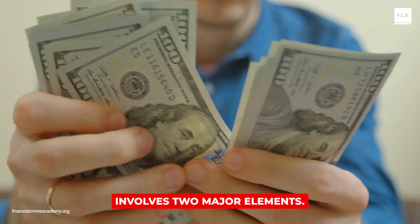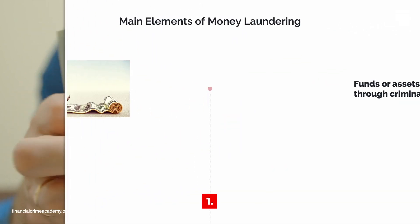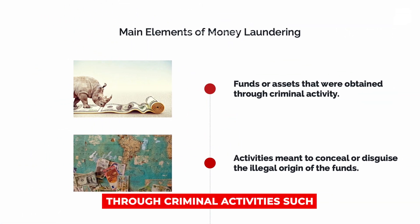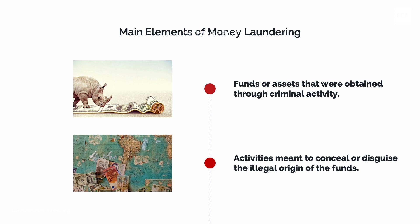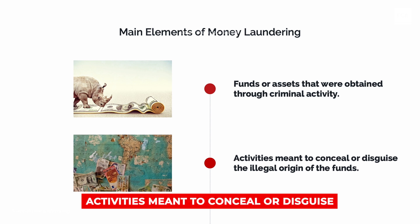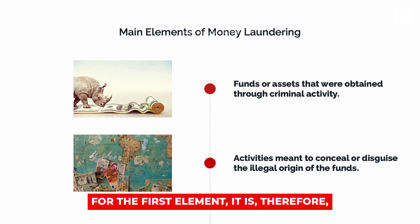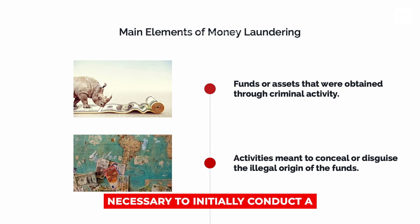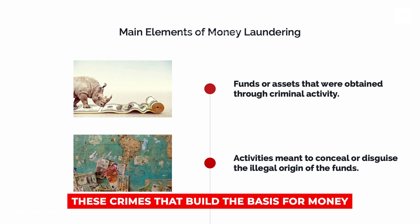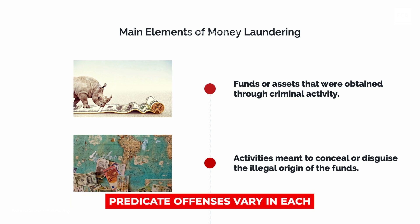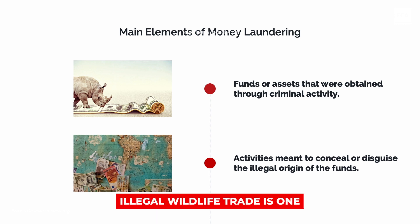Money laundering typically involves two major elements. One, funds or assets that were obtained through criminal activities such as illegal wildlife trafficking. Two, activities meant to conceal or disguise the illegal origin of the funds. For the first element, it is therefore necessary to initially conduct a crime and to make money from it. These crimes that build the basis for money laundering are called predicate offenses. Predicate offenses vary in each country and are usually codified in a country's criminal code. Illegal wildlife trade is one example of a predicate offense.